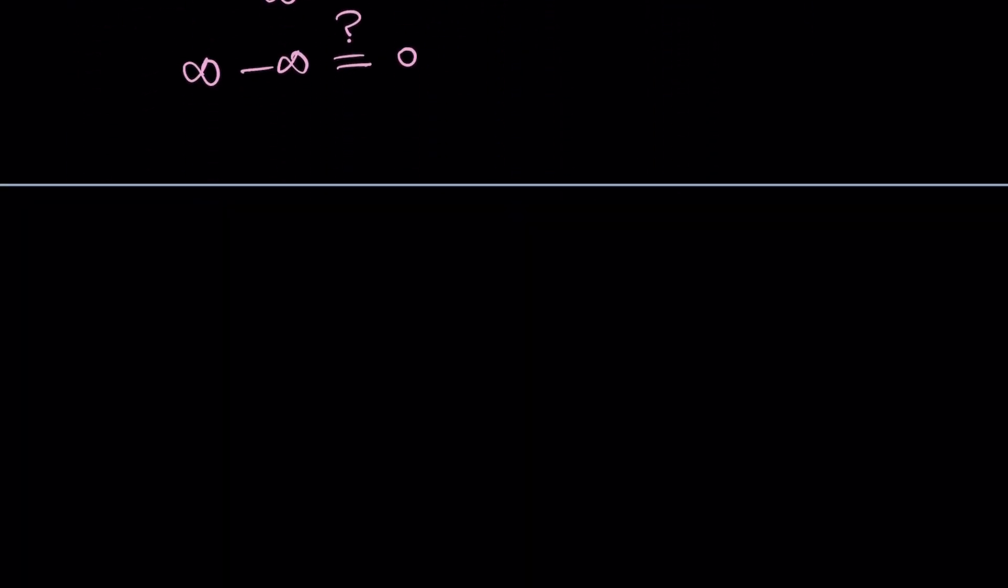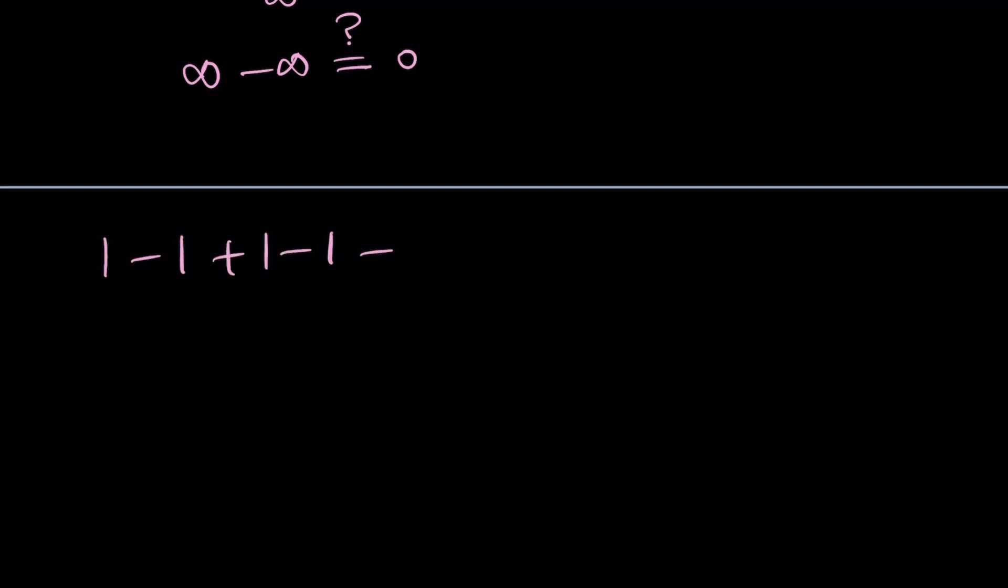We're going to write this sum again. 1 minus 1 plus 1 minus 1 plus dot dot dot. And we're going to call this S this time because S represents the sum. And now, we're going to do what we did to get 1. So we're going to negate everything except for the first term and put them all in parentheses. And now, this is equal to the same sum because I haven't really changed, added, or subtracted anything.